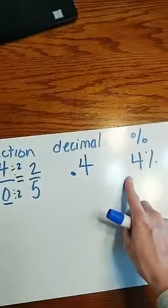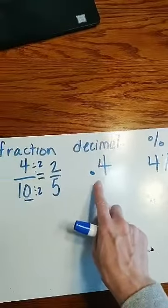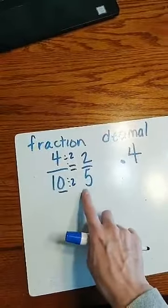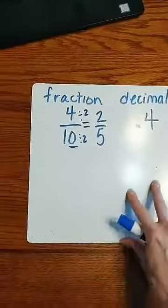So if we have 4%, 4 tenths is the decimal, and 4 tenths reduced to 2 fifths is a fraction.